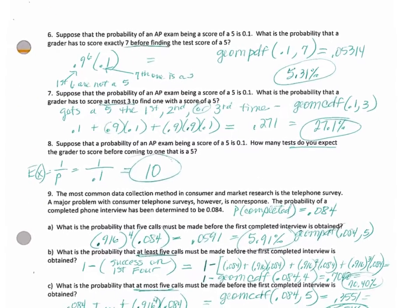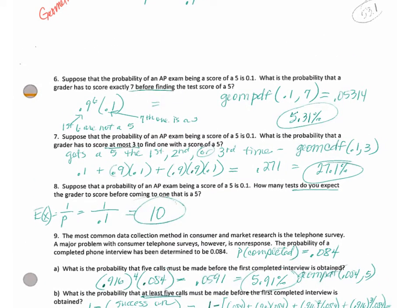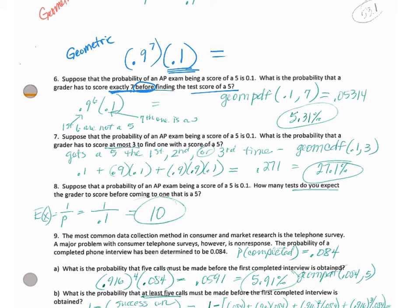Number 6: suppose the probability of an exam being scored a 5 is 0.1. What's the probability that the grader has to score exactly 7 before finding the score of a 5? I think this means the first 7 are not a 5, and then the 8th one is. This is geometric because it is telling you where the first winner is — the winner is in the 8th place. That's what makes it geometric. The answer is 4.78%.